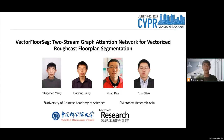Hello everyone, thanks for watching this video. Today I'm going to talk about our work, Vector FloorSeg. We present segmented segmentation, a typical kind of vector graphics, to process vector floor plans directly with compact and regular vectorized segmentation. While existing image-based segmentation networks are not directly applicable, we propose a two-stream graph attention network and cast the problem into dual tasks of room boundary classification and partition region classification. A novel modulated GAT module is devised to enable efficient interactions between the two streams and their mutual enhancement. Results and new metrics show our method achieves superior performance and produces much more regular and integral floor plan segmentation.